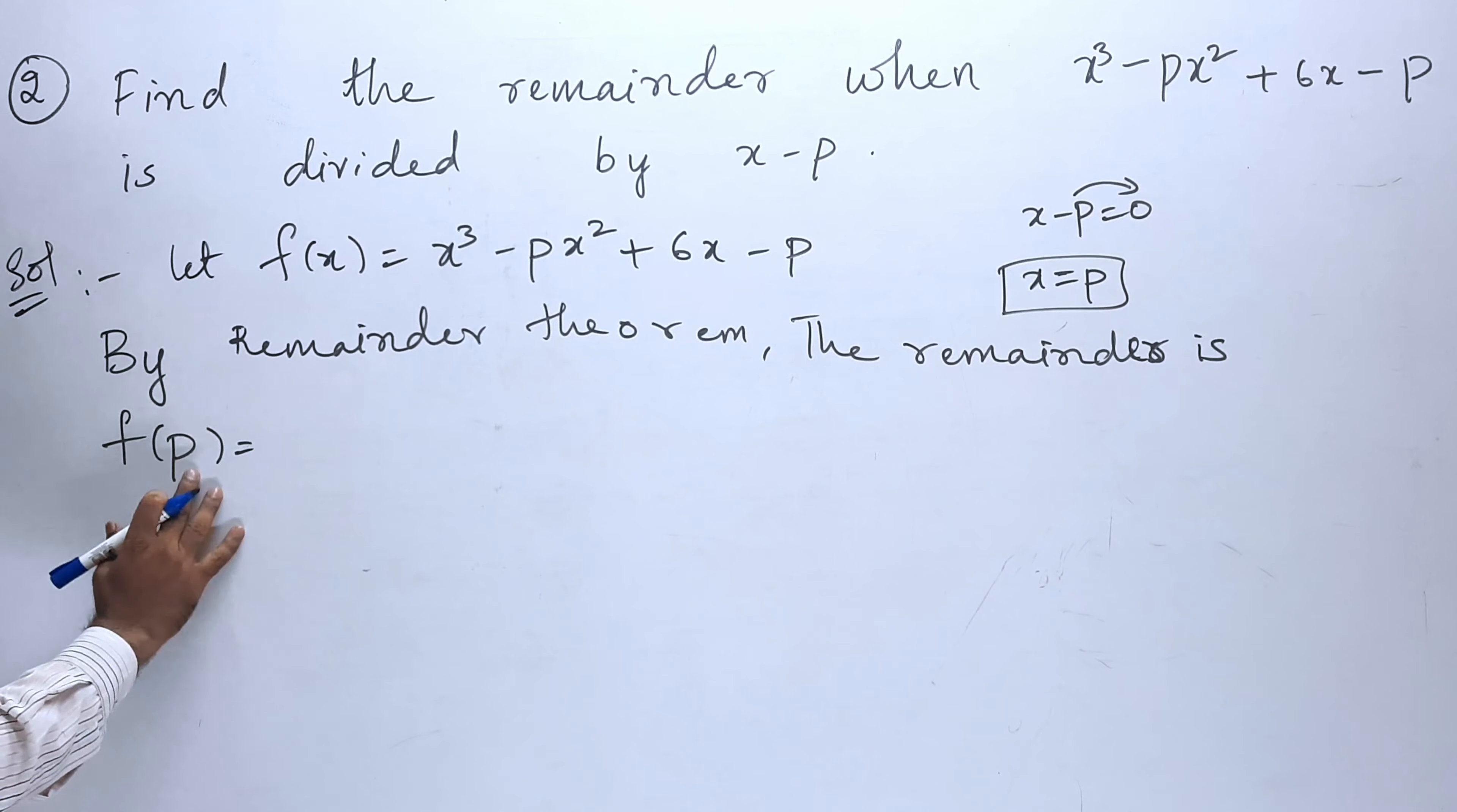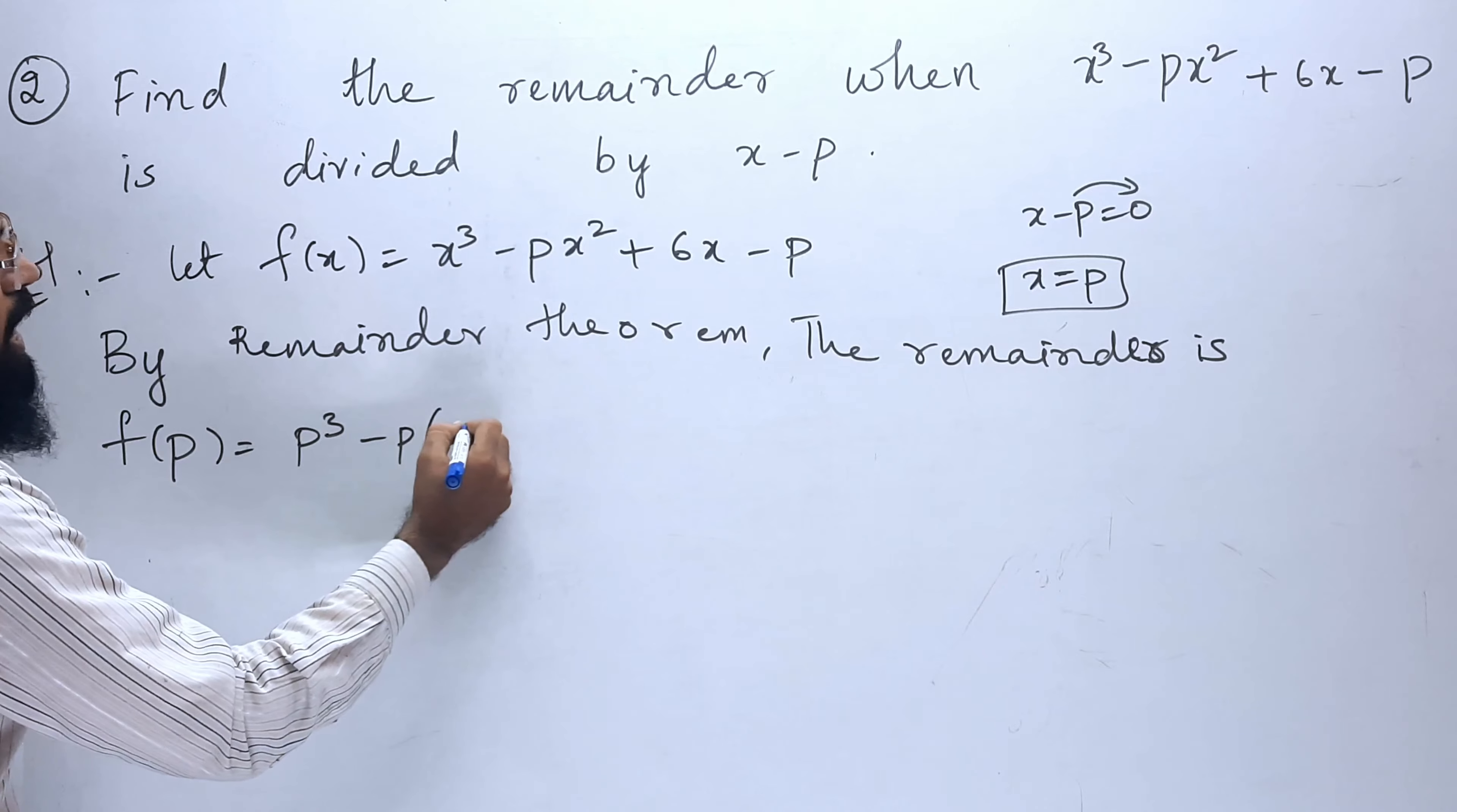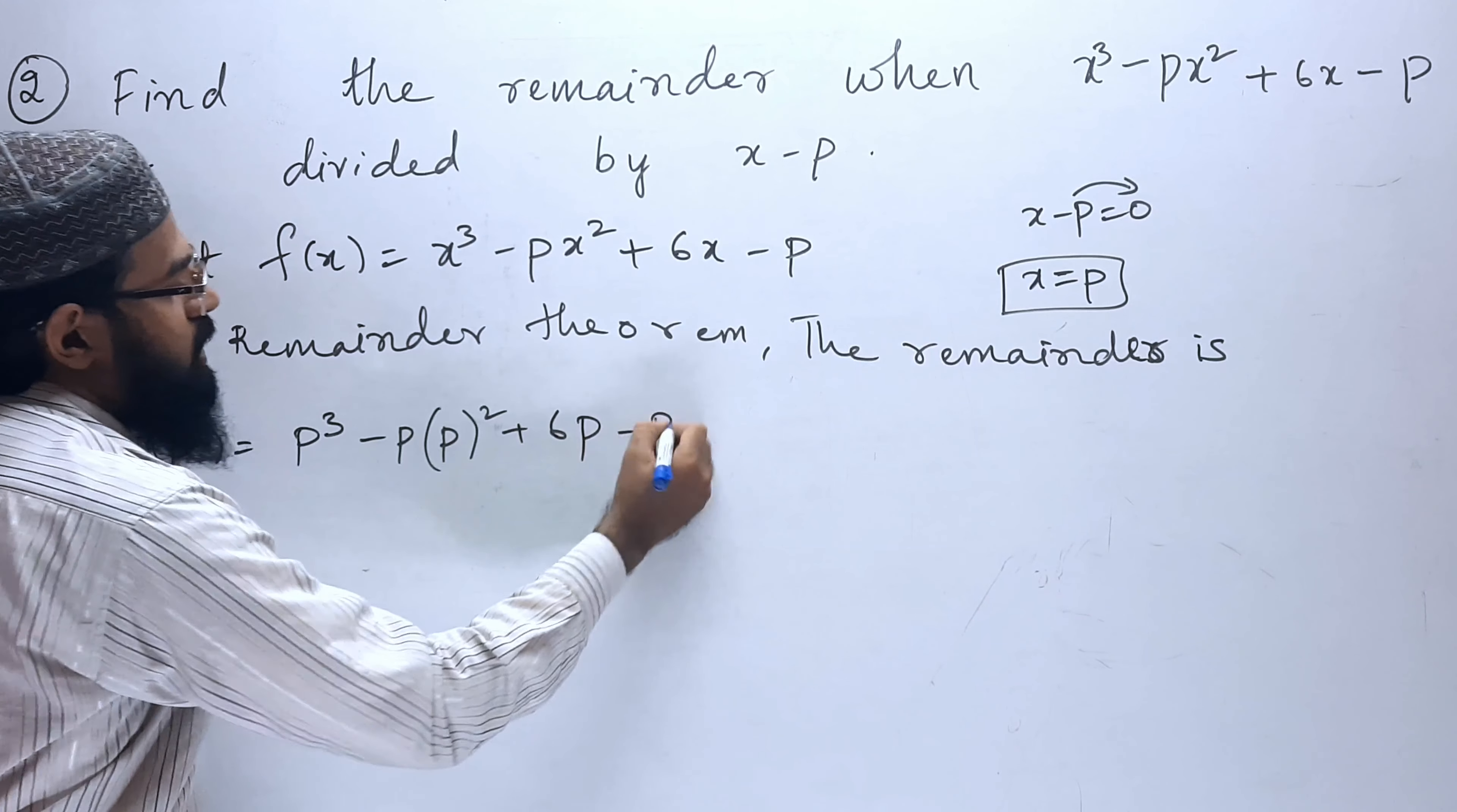So, let us substitute p in place of x. So, p cube minus p into p square plus 6p minus p.